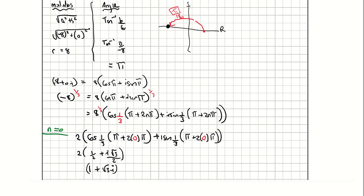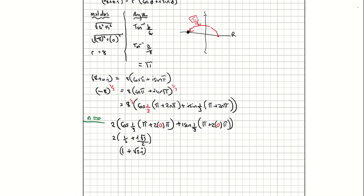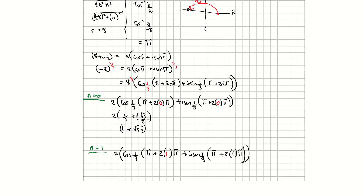For n equals 1: 2 times cos of one third times pi plus 2 pi, plus i sine of one third times pi plus 2 pi. Evaluating that gives 2 times cos of 3 pi over 3, which is cos of pi, giving minus 1 plus 0i. Multiplying by 2 gives negative 2. So there's the second complex number.